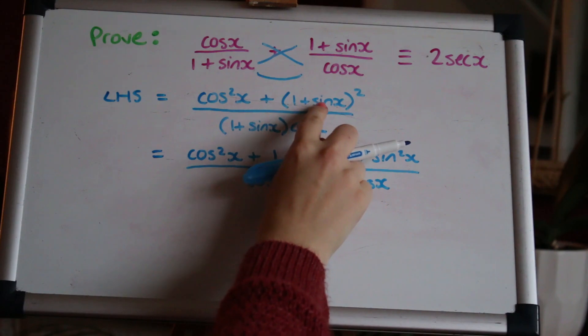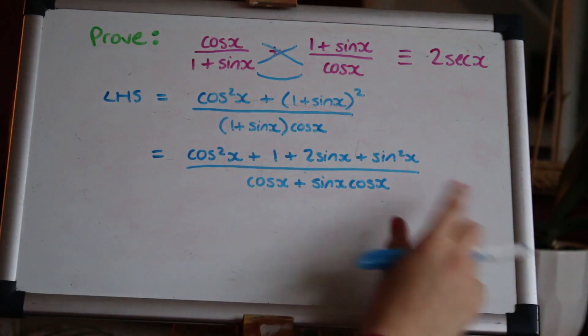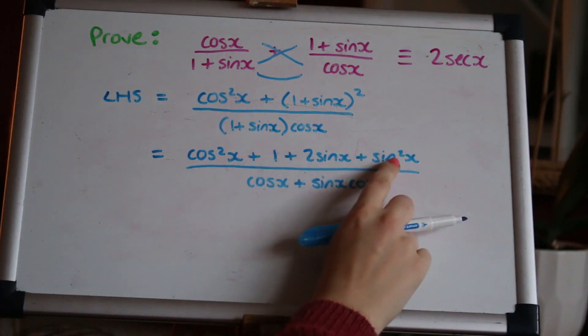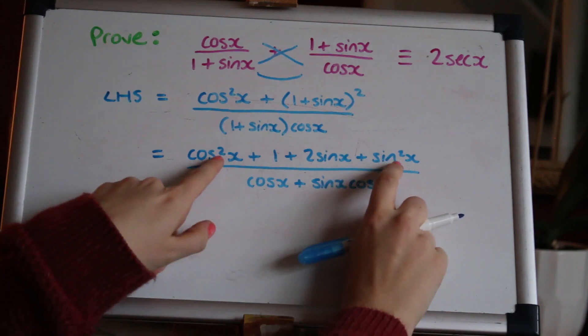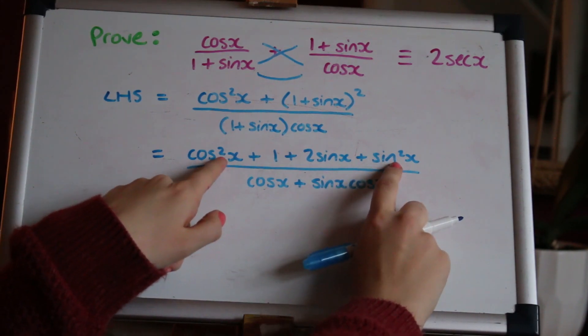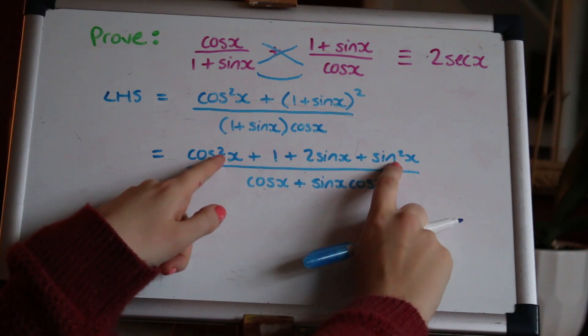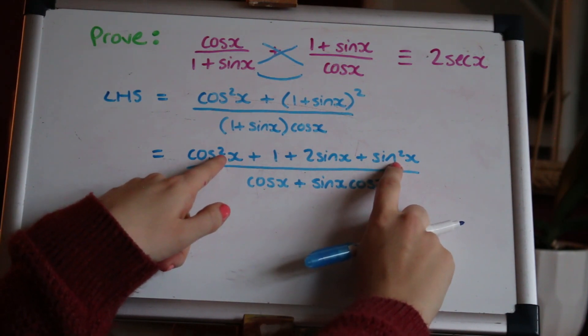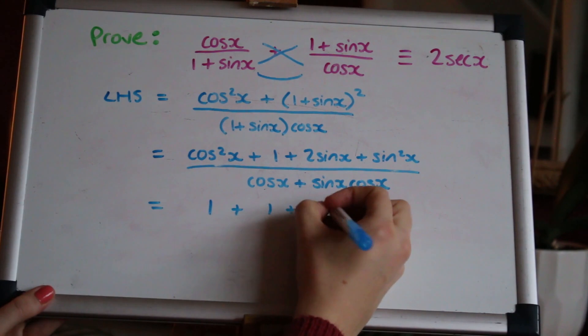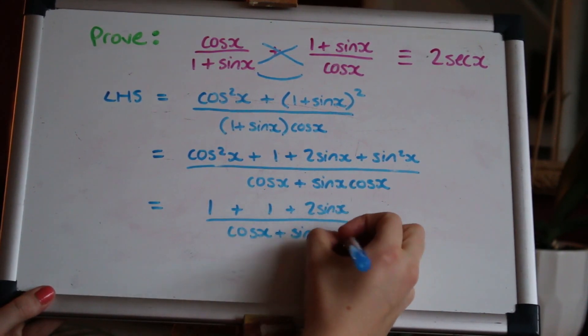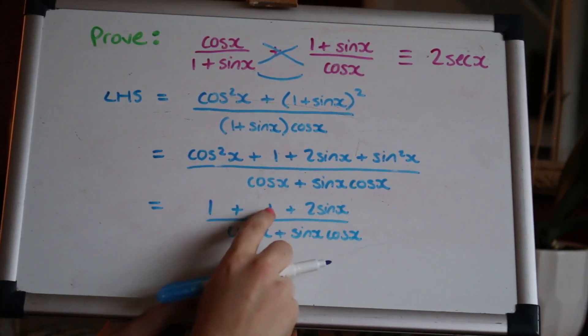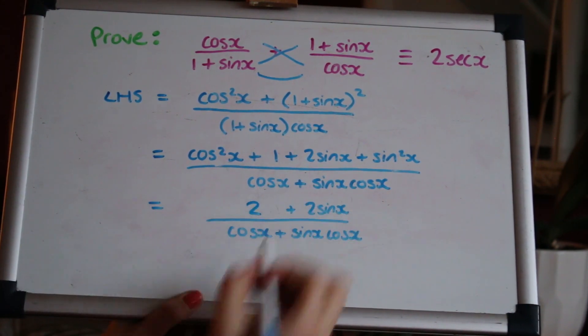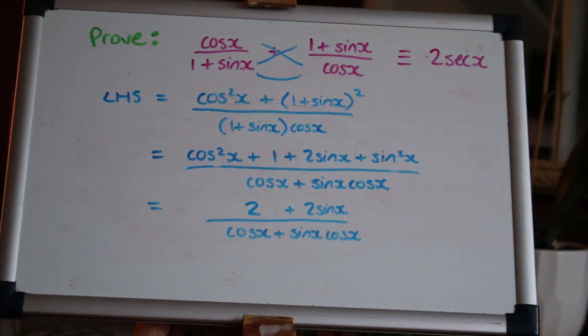When you do that remember it's a double bracket expansion so 1+sinx times by 1+sinx which is why you get the three terms there, don't let that trick you out. Now here on the top I've got cos²x + 1 + 2sinx + sin²x and I know from previous identity that cos²x + sin²x = 1, so on the top there I've got 2 + 2sinx. I'll just change that quickly and now that that's simplified down I can see...